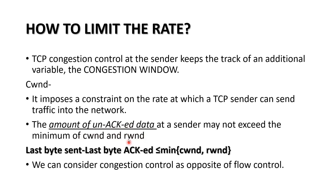The data which is not acknowledged cannot be greater than the congestion window or the receive window. TCP congestion control at the sender keeps track of an additional variable. The formula is: last byte sent minus last byte acknowledged is always less than or equal to the minimum of congestion window and RWND.